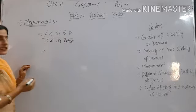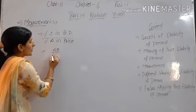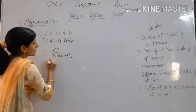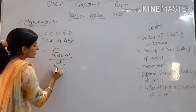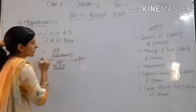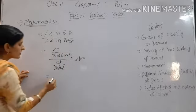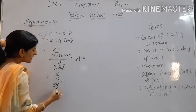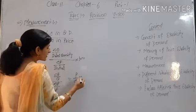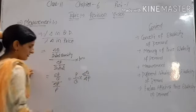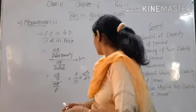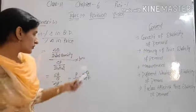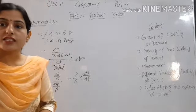We can also write this formula as: change in quantity upon initial quantity, divided by change in price upon initial price, multiplied by 100. Simplifying, we get change in Q upon Q divided by change in P upon P, which can also be written as P upon Q multiplied by change in Q upon change in P. This is the formula for calculating elasticity of demand.